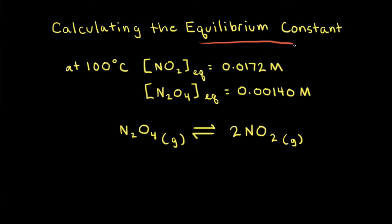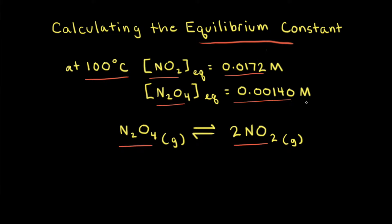An equilibrium constant can be calculated from experimentally measured concentrations or partial pressures of reactants and products at equilibrium. As an example, let's look at the reaction where N2O4 in the gaseous state turns into 2NO2 also in the gaseous state. We do an experiment and allow this reaction to come to equilibrium at 100 degrees Celsius. At equilibrium, the concentration of NO2 is 0.0172 molar and the concentration of N2O4 is 0.00140 molar.